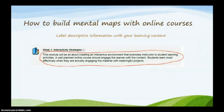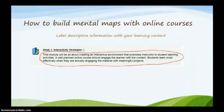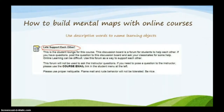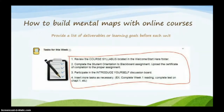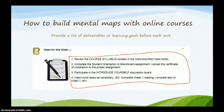So how do we build mental maps in online courses? First, label descriptive information with your learning content. In my week one interactive strategies, I have a small paragraph that outlines what the week is about, giving students a mental map of what they'll be doing. Use descriptive words to name learning objects — for example, calling a folder 'Let's Support Each Other' tells the student it's a place to receive help. Provide a list of deliverables or learning goals before each unit, lined up with your unit of instruction.